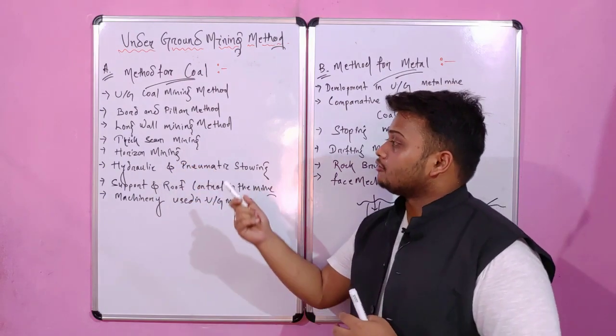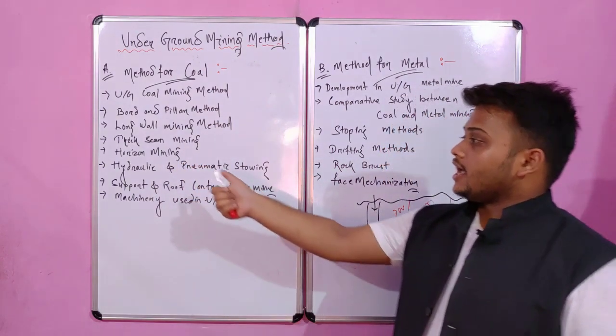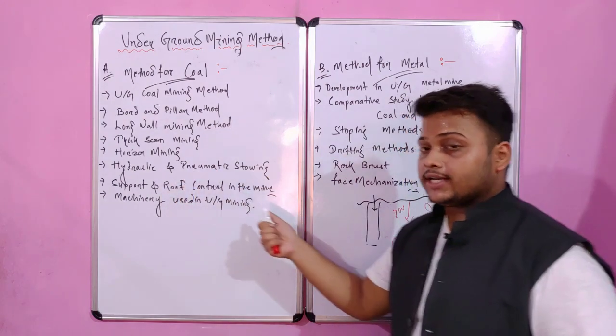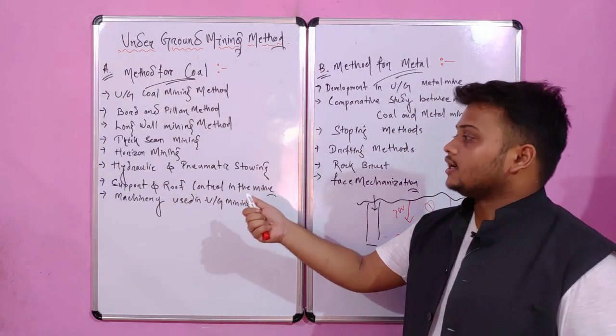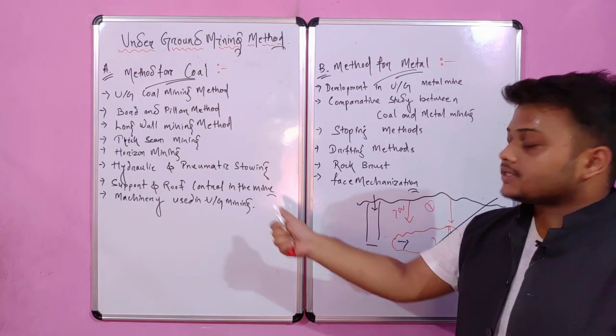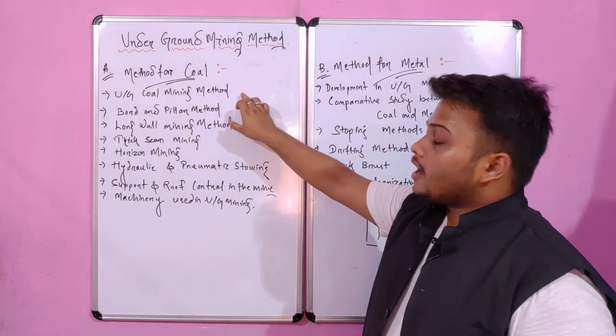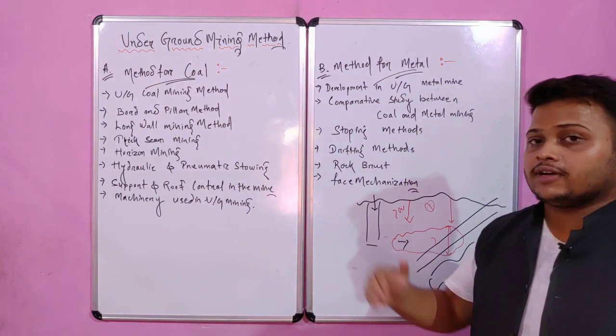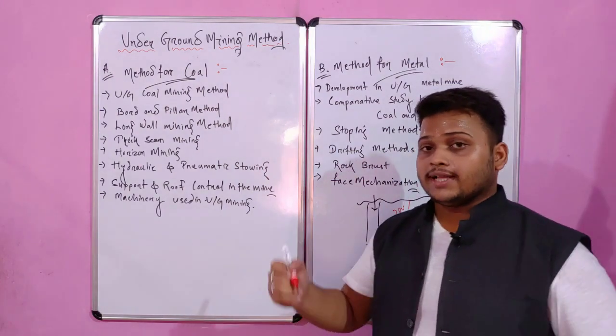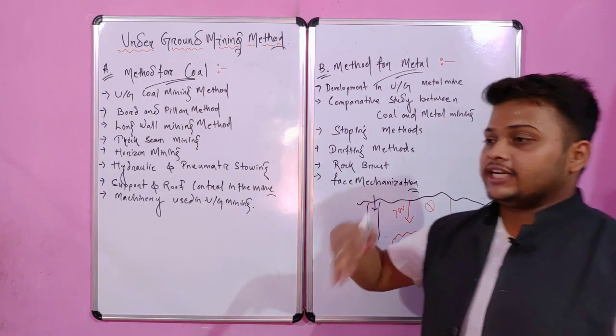Then horizon mining, hydraulic and pneumatic stowing, support, roof control in the mine, and machinery used in underground mining. Basically this part covers the development processes of an underground coal mine.